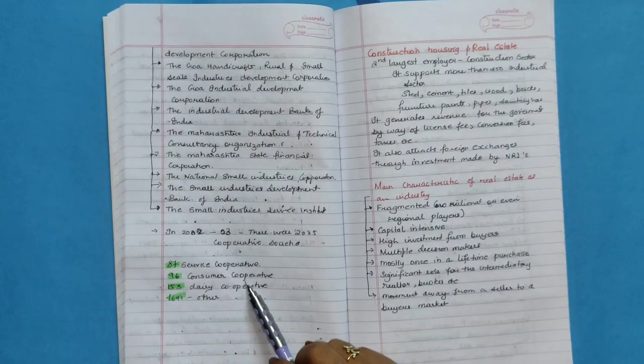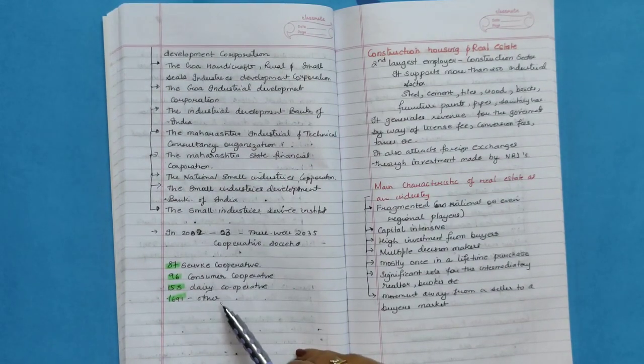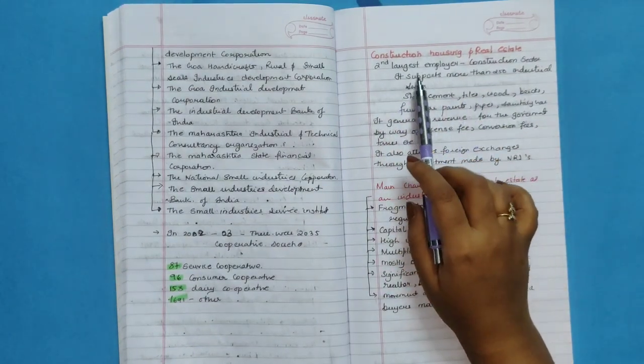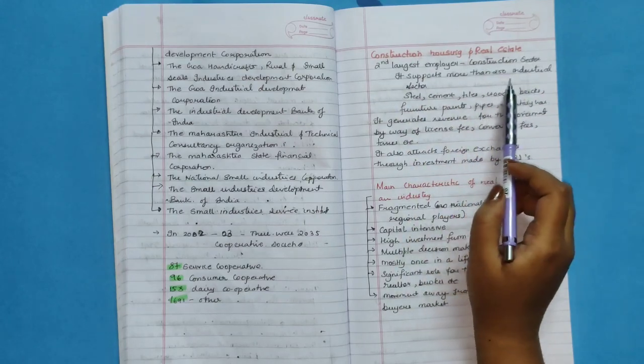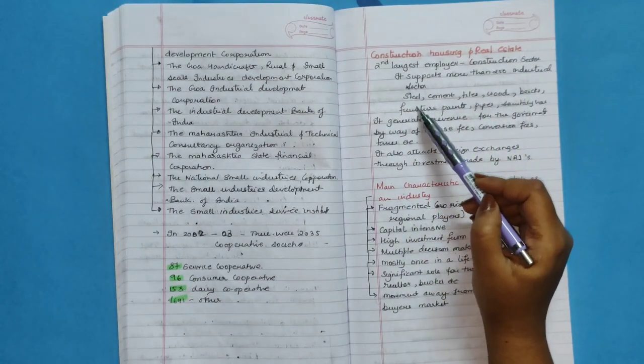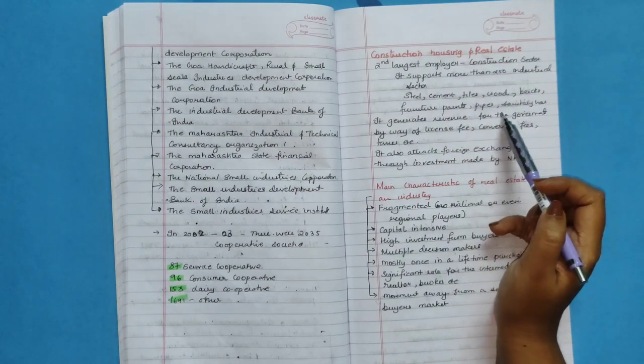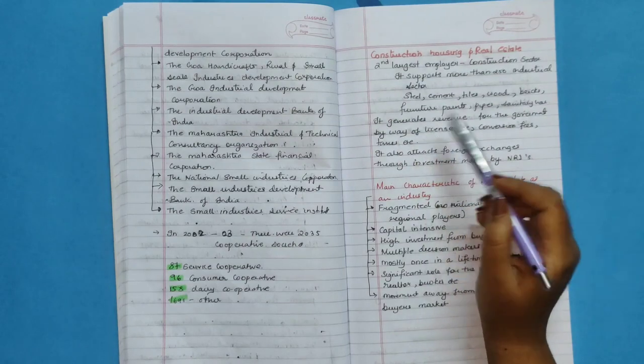In 2002 to 2003, there were 2,035 co-operative societies, 87 service co-operative, 96 consumer co-operative, 158 dairy co-operative and 1,691 others. Construction, housing and real estate. Second largest employer: construction sector. It supports more than 250 industrial sectors like steel, cement, tiles, wood, bricks, furniture, paints, pipes, sanitary ware.